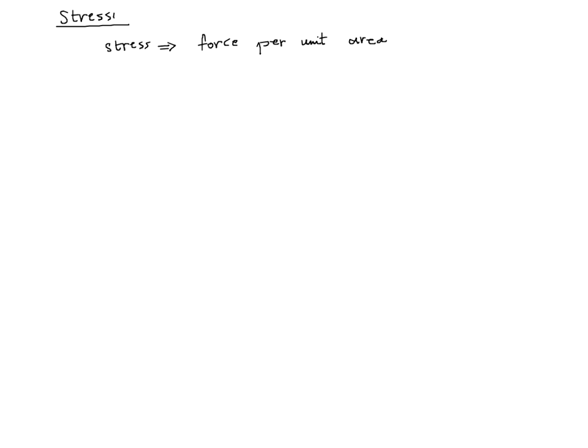In general, if we have a surface with a certain force acting on it, that force will not necessarily be normal to the surface. If we divide that force by area, we expect to get a stress. By this reasoning, we would think of stress as a vector, because force is a vector and area is a scalar. But actually, what comes out of that is not stress.